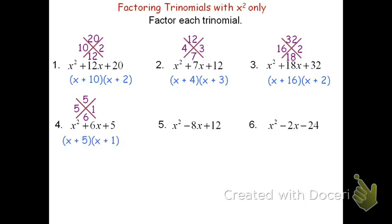Problem 5 and 6 introduce the negative sign — we need to watch out for this. When we set up the diamond for number 5, it's a positive 12 on top but a negative 8 on the bottom because it's minus 8x. I'm looking for factors that multiply to a positive 12 but combine to a negative 8. Since a negative times a negative is positive, I need two negative numbers. Negative 6 times negative 2 is positive 12, and negative 6 plus negative 2 is negative 8. The factored form is therefore the quantity x minus 6 times the quantity x minus 2.